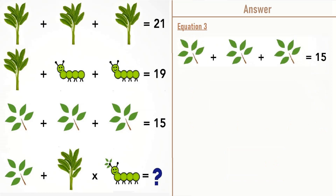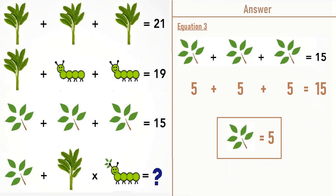Now moving on to equation number 3, we have leaves plus leaves plus leaves is equal to 15. 5 plus 5 plus 5 is equal to 15, so leaves are equal to 5.